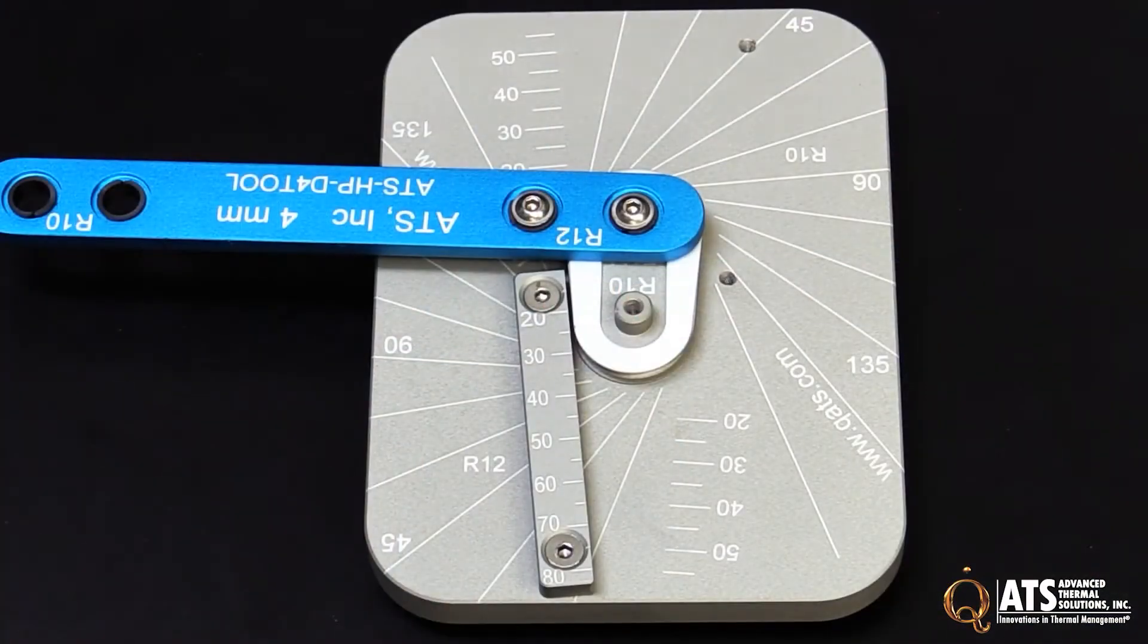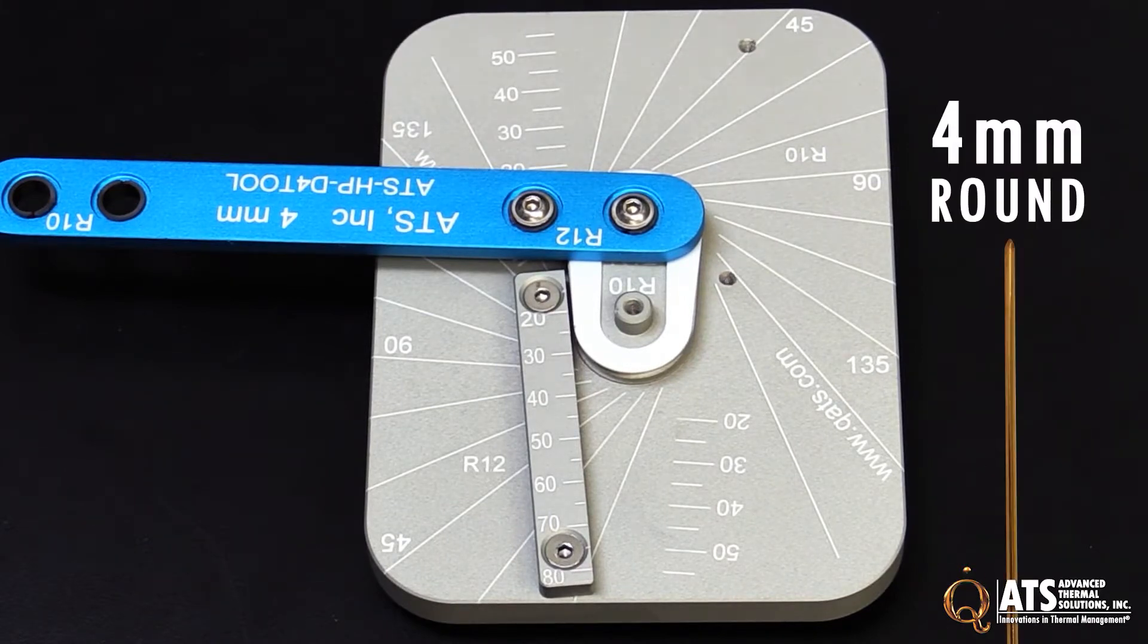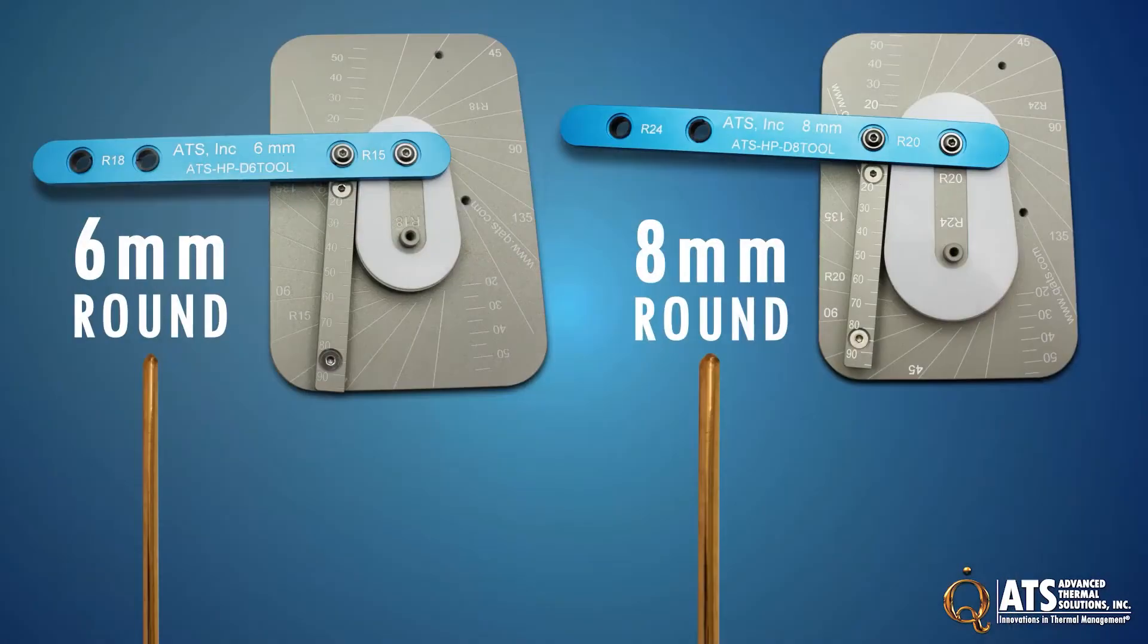What you see here in front of you is a 4 millimeter bending tool. It works for 4 millimeter round heat pipe. We also have 6 and 8 millimeter heat pipe bending tools.